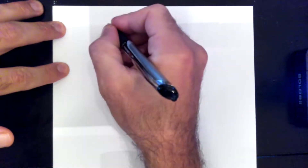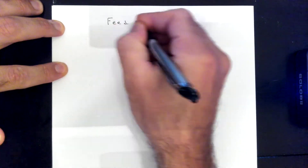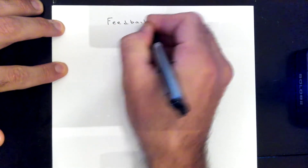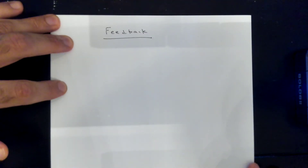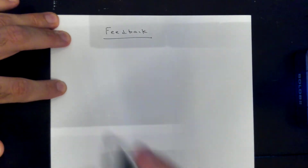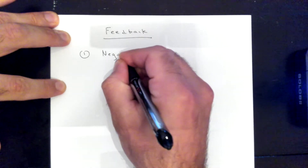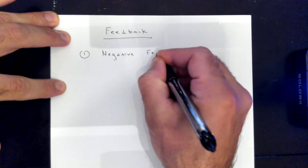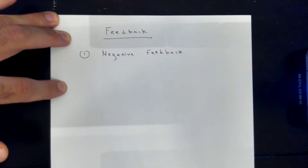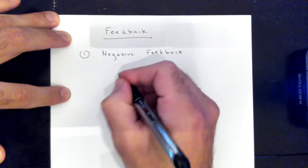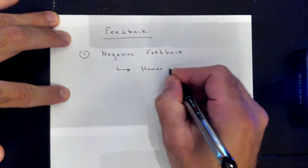Today we're going to be going over feedback. There are two different types of feedback that we use. The first one is called negative feedback, and this one is used in order to achieve homeostasis.